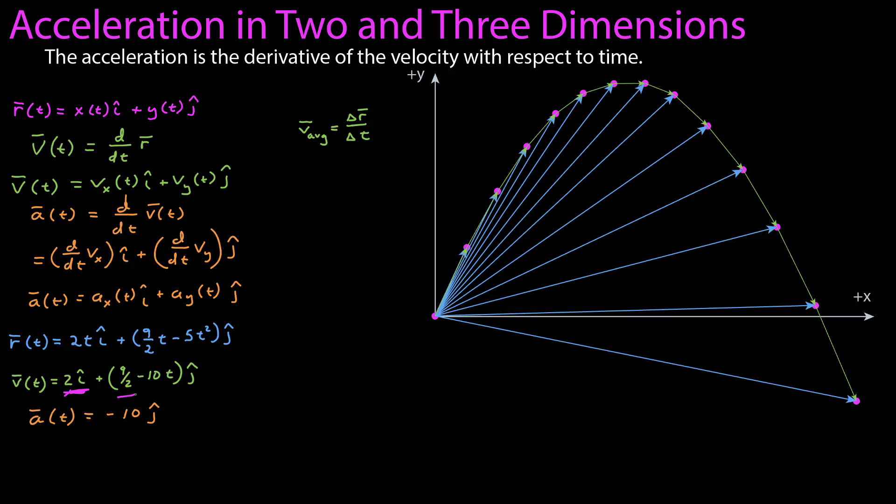From those, we calculated the average velocity. Now, the average velocity has units of meters per second, but the relative sizes of those arrows directly correspond to the relative sizes of the average velocities. Now, we want to calculate the average acceleration.